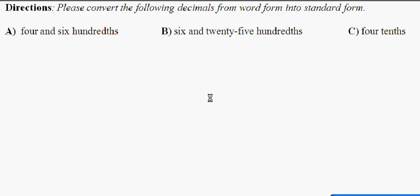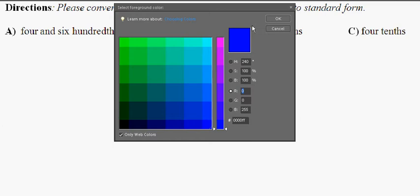Okay, Kipsters, so today we're going to be talking about how to convert decimals from word form into standard form. So in order to do that, let's first choose our color for today. I think we're going to go with blue.